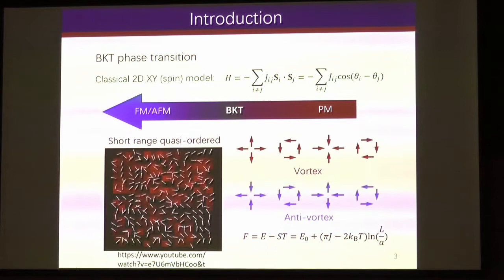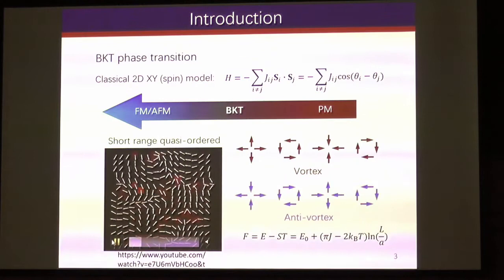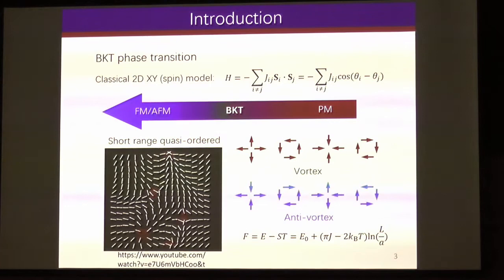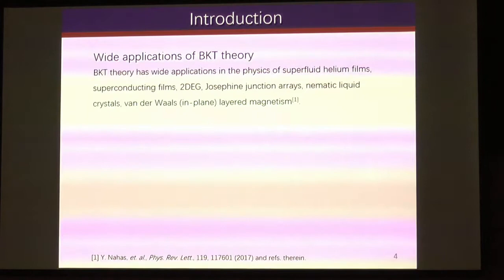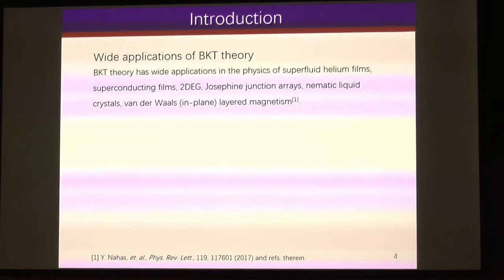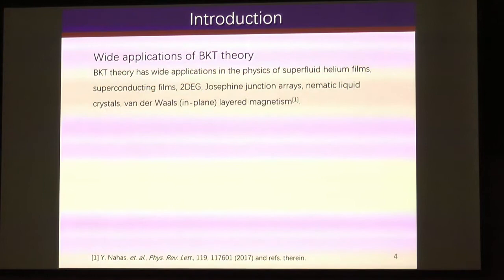I would like to show a video where we can see something about the BKT phase. When lowering temperature from high temperature, before it goes to the low-temperature ordered state, there is something like a vortex and anti-vortex. Sometimes they form a pair. According to the theory, such vortex and anti-vortex pairs lower the total energy. The BKT theory has wide applications in many different systems, for example suprafluids and superconductors.